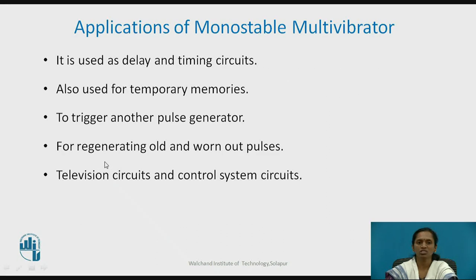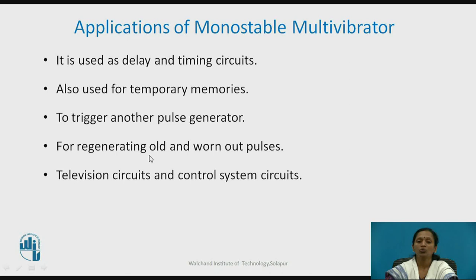The applications of the monostable multivibrator include: it is a circuit which provides delay, so it is very useful for timing circuits. For digital circuits, it is used as temporary memory. It is very useful to trigger any kind of circuit — most of the time for oscillator circuits. It will also regenerate old and worn-out pulses, making it very useful for pulse regeneration. Most of the time it is used in television circuits and control system circuits to obtain a pulse at the output.